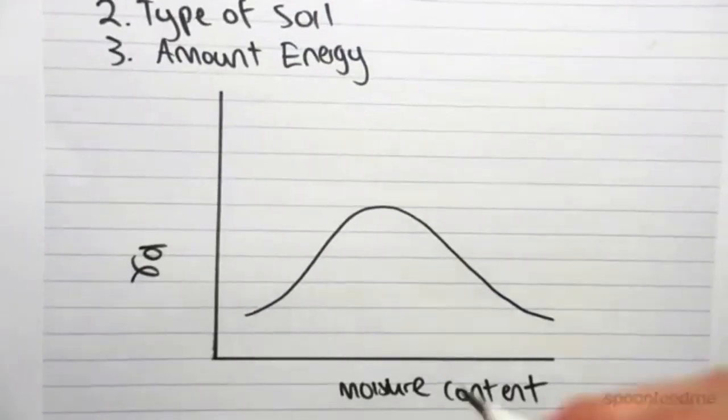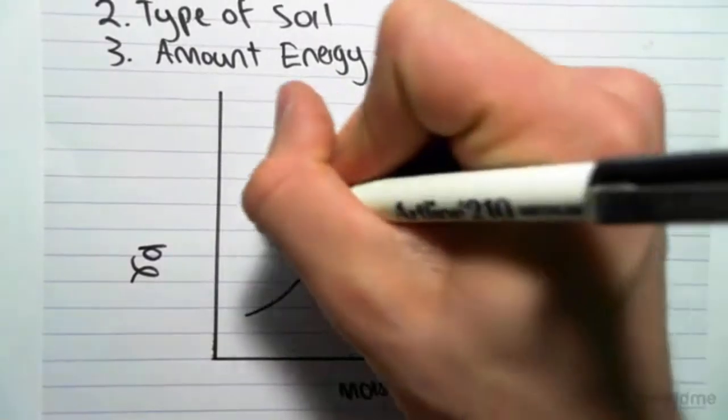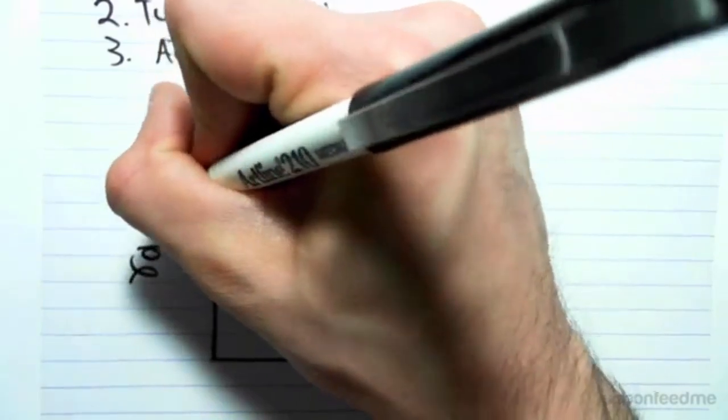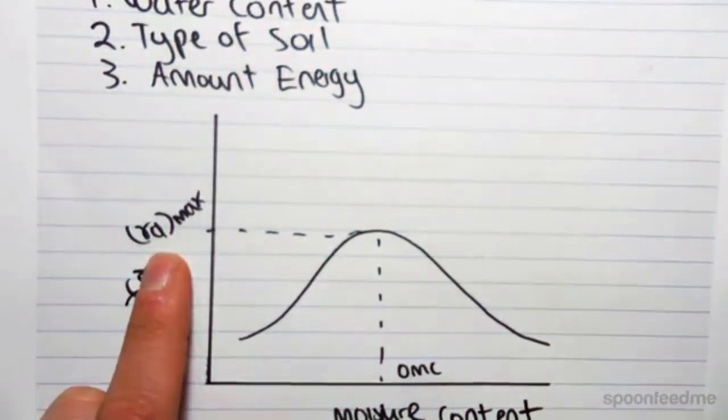What it's saying is that at some particular point, we're going to get an optimum moisture content, which will give us a maximum dry unit weight, which is what we want. We want the soil to be compacted to that dry unit weight.